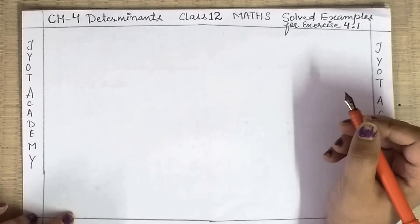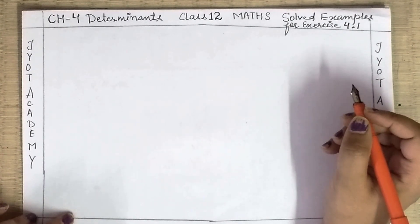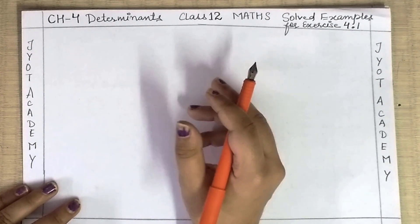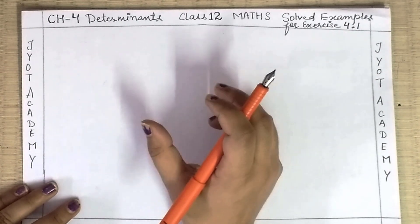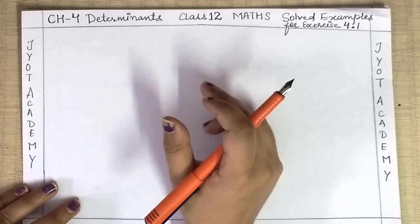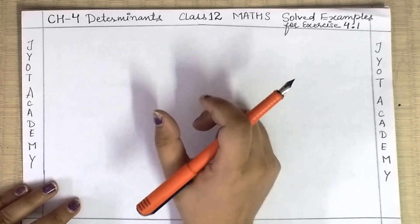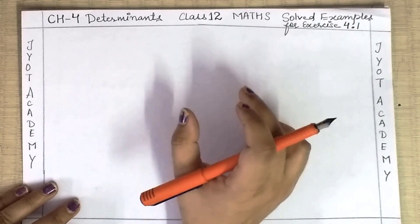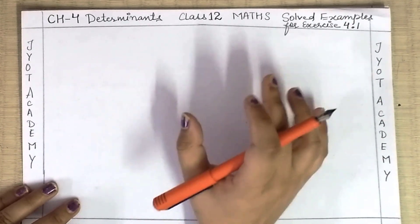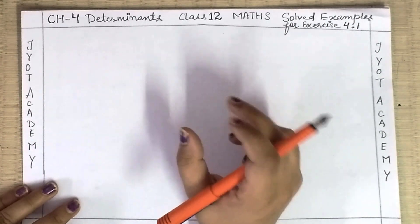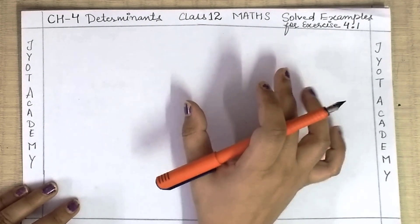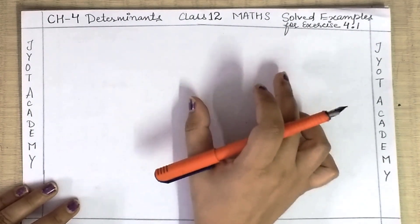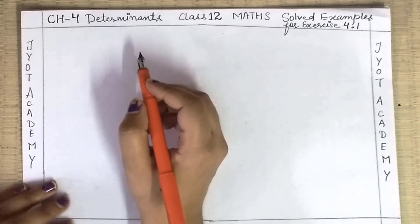Hello students, welcome back to my YouTube channel. Today we start a new chapter — that is Determinants, Chapter number 4. Previous chapter, Chapter 3, was Matrices, in which I gave you a basic introduction. I also gave you an introduction to determinants: how to find a determinant of order one, order two, and order three. Please check the previous videos; I have provided all the links in the description box.